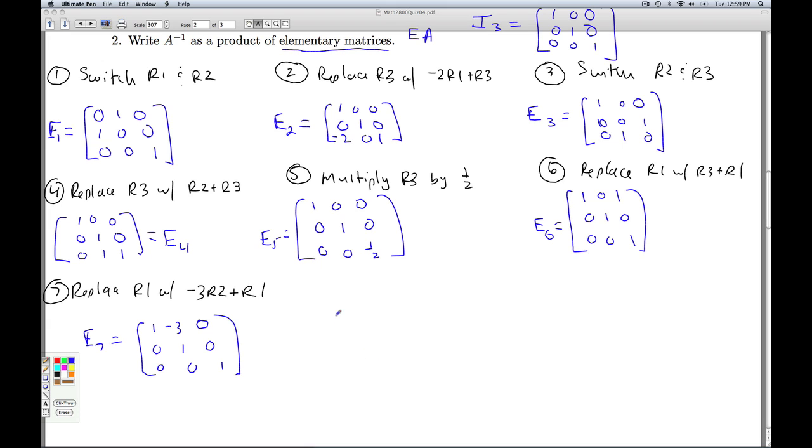Those are our elementary matrices. So if we think about what we did, we started with the matrix A, and then we did the first row operation to A, then the second row operation to this matrix, and then the third, fourth, fifth, sixth, and seventh. And what did this work out to be? The identity.